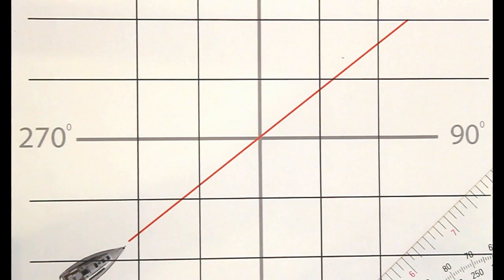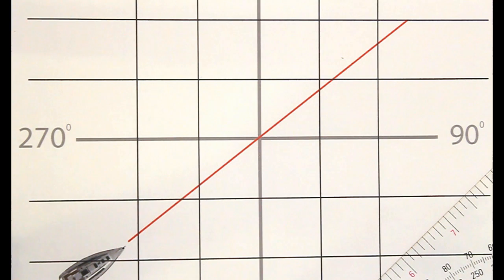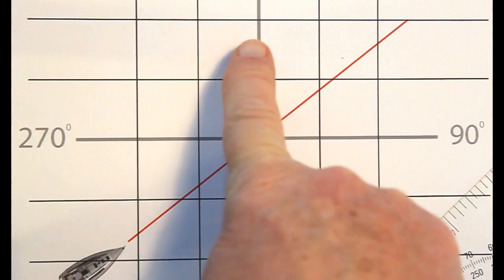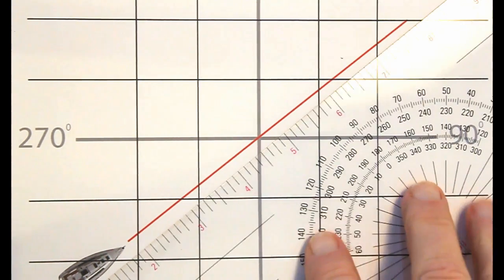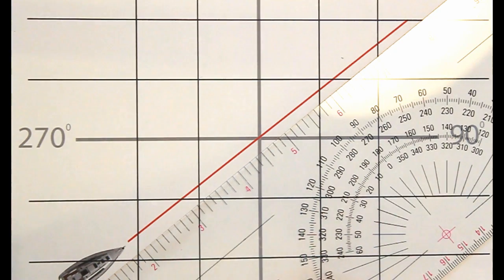In this diagram, the red line represents the course that the boat is taking. We know from previous that the answer is going to be somewhere between 0 degrees and 90 degrees. The first thing we do is roughly put the edge of the plotter more or less along the line. It doesn't have to be exact at this stage.